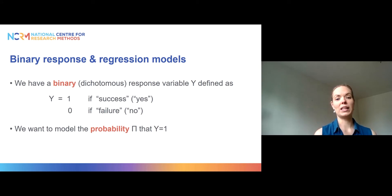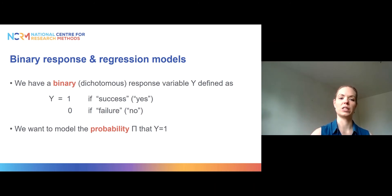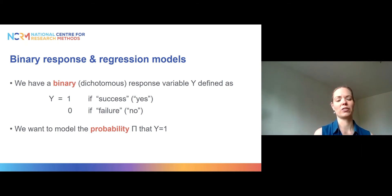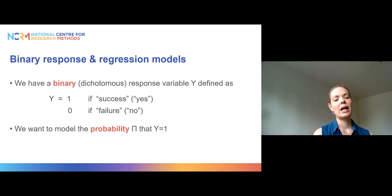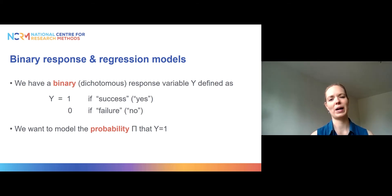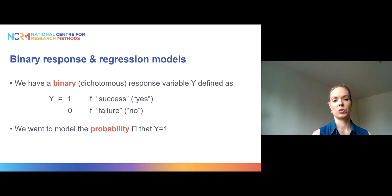When we have binary variables, we normally code them as zeros and ones. It usually makes sense to code them so that the type of response you're interested in is coded as one — it might be success, such as whether someone passes an exam, or yes to a binary question, like whether you've had COVID-19, where yes is coded as one and no as zero. What we're ultimately interested in when we run these models is the probability that y equals one, and we use the Greek letter pi to denote those probabilities.